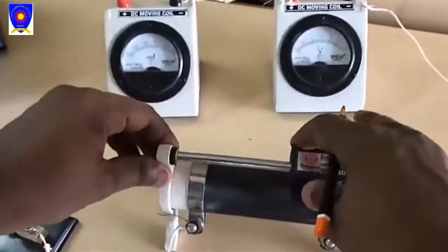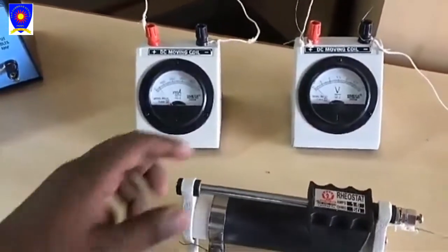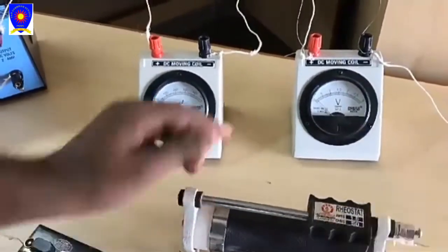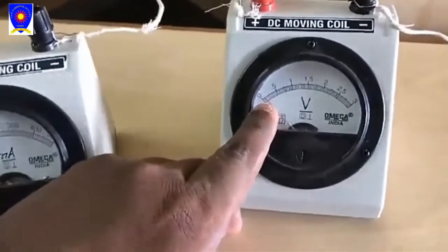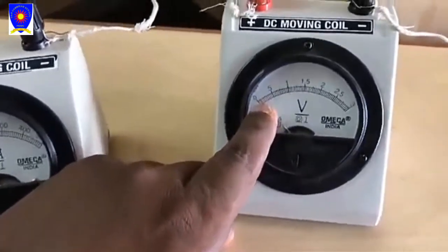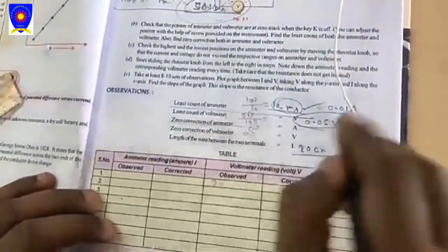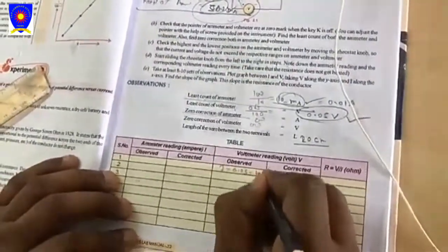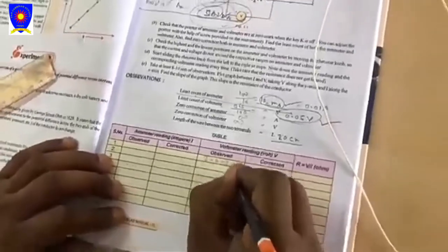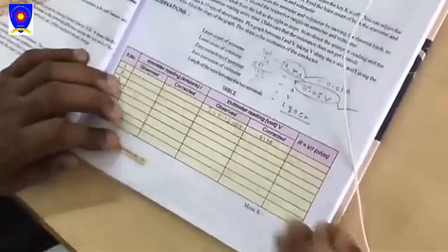Now we have to perform the activity. How do we perform? We have to note down all the readings on voltmeter and on milliammeter both. Now we have to slide slowly. I am going to slide. In this condition, the reading on voltmeter is on the second division. This is reading of voltmeter - second division. Least count is 0.05, so it will be 0.10, and its corrected value will also be 0.10.